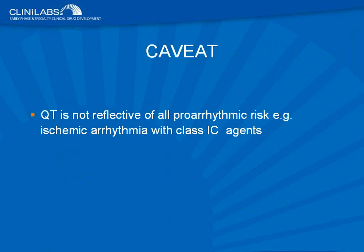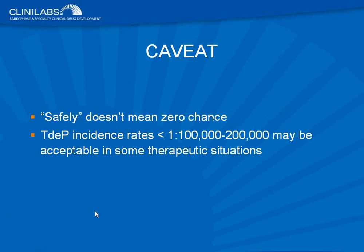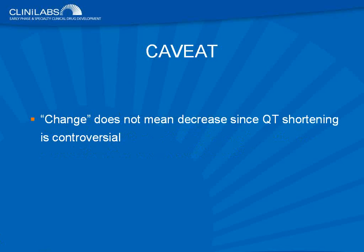Just a few caveats: proarrhythmic events can also occur by mechanisms other than QT interval prolongation. For example, potent sodium channel blockers like class 1c antiarrhythmic drugs have a liability for proarrhythmia in an ischemic substrate — a totally different mechanism. Using a drug safely doesn't mean it has zero chance of causing torsad. If a drug prolongs the QT interval by a small but demonstrable amount, it doesn't necessarily preclude clinical value since we may be talking about torsad incidence rates of less than 1 in 100,000 to 200,000 patients exposed — which may be perfectly acceptable depending on clinical benefit.